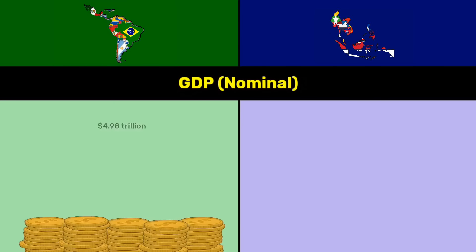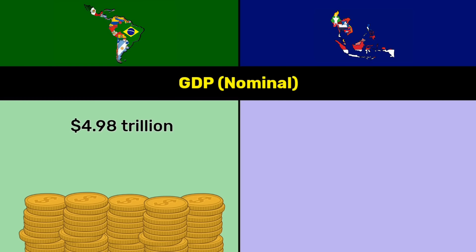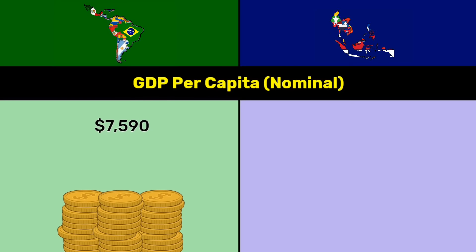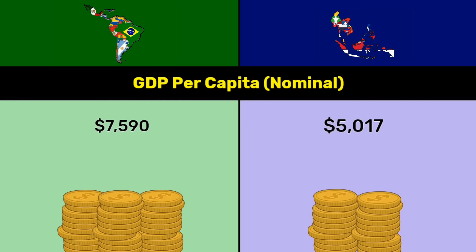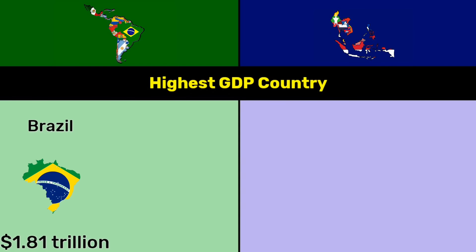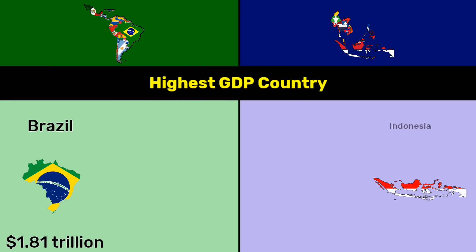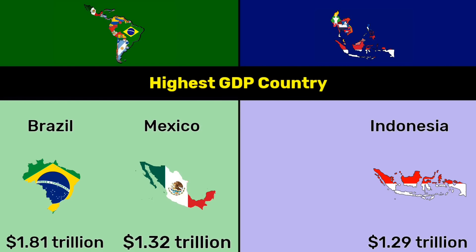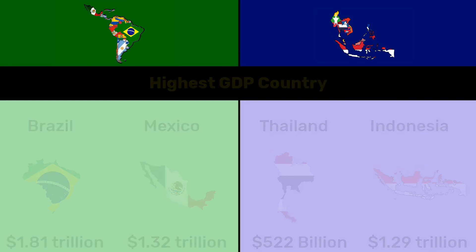GDP nominal: 4.98 trillion dollars for Latin America versus 3.5 trillion dollars for Southeast Asia. GDP per capita for nominal GDP: 7,590 dollars versus 5,017 dollars. Highest GDP country: Brazil 1.81 trillion dollars and Indonesia 1.29 trillion dollars; Mexico 1.32 trillion dollars and Thailand 522 billion dollars.